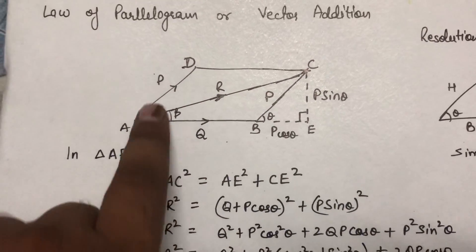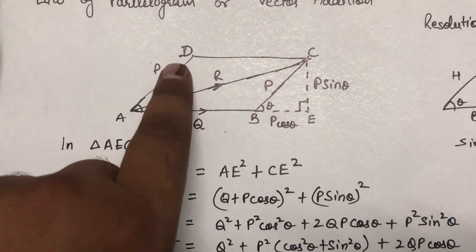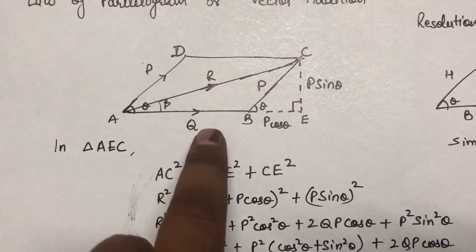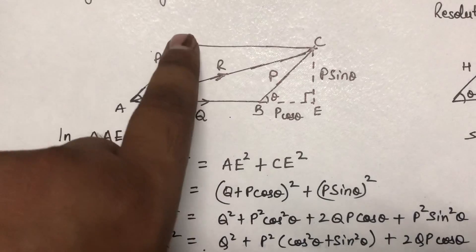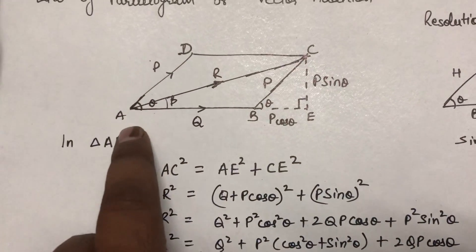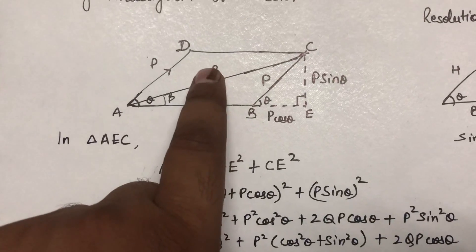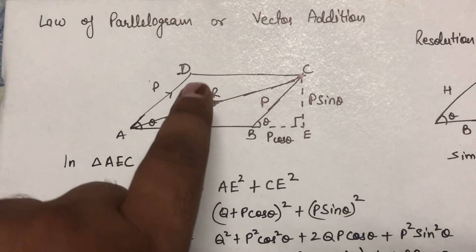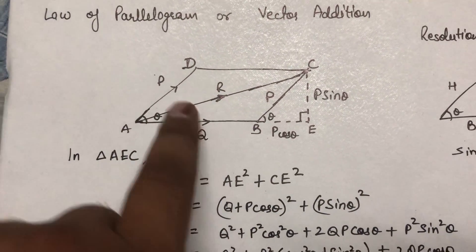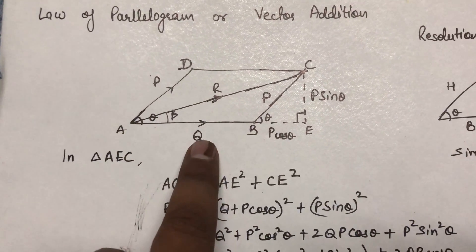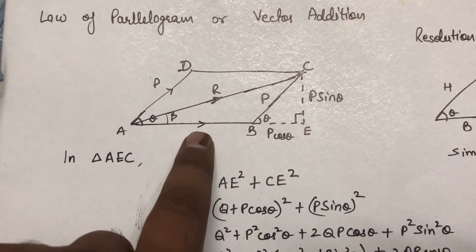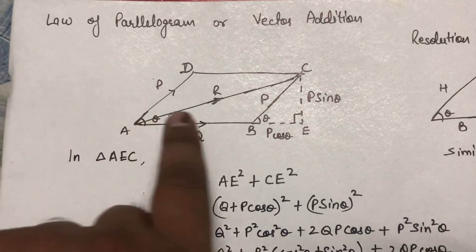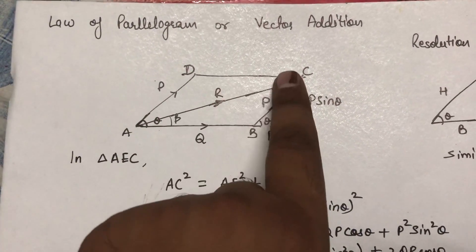The definition of the law of parallelogram is that if two adjacent sides of a parallelogram are represented by two forces P and Q, then the diagonal of this parallelogram represented by AC is the resultant of these two forces. In other words, if the two adjacent sides of a parallelogram are represented by two vector quantities P and Q, then the resultant R is represented by the diagonal of the parallelogram.